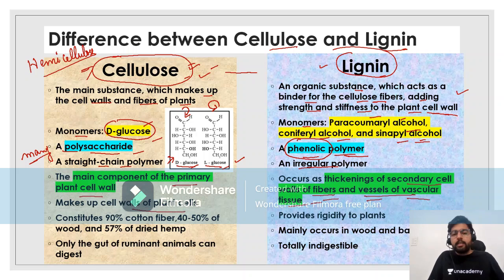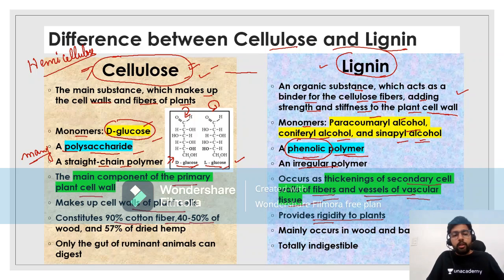Cellulose makes up the cell wall of plant cells and provides rigidity to the plants. It constitutes 90% of cotton fiber, 40 to 50% of wood, and 57% of dried hemp. Lignin also provides rigidity to the plants and mainly occurs in wood and bark.